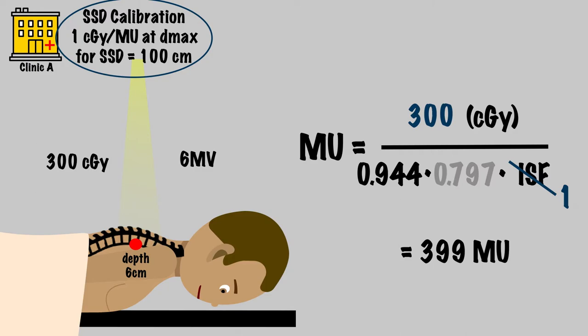You should always make sure this calculation makes sense. For instance, if your calculation yielded 600 MU for a prescribed dose of 300 centigrade, we should instantly smell a calculation error and recheck our inputs.